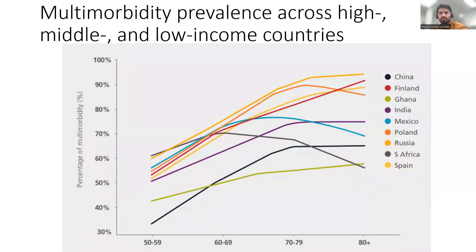This graph shows multimorbidity prevalence across age groups in several low, middle, and high income countries. The data has been taken from a cross-sectional analysis of studies including 41,000 adults aged more than 50. It shows that high prevalence of multimorbidity occurs in older adults across countries, and that low and middle income countries are gradually approaching those of high income countries. Multimorbidity was defined as coexistence of at least two of the following conditions: arthritis, asthma, COPD, depression, diabetes, obesity, stroke, and so on.